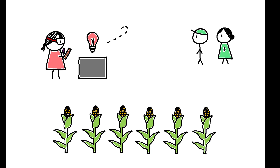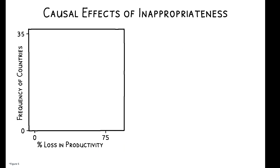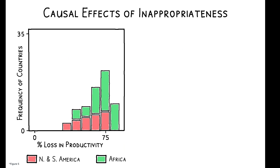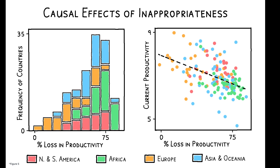Overall, the authors estimate that inappropriateness reduces average global agricultural productivity by 40 to 50 percent and explains 10 to 15 percent of cross-country disparities in productivity. The largest losses are concentrated in Africa and Asia, and, as seen here, these are precisely the countries that are least productive today.